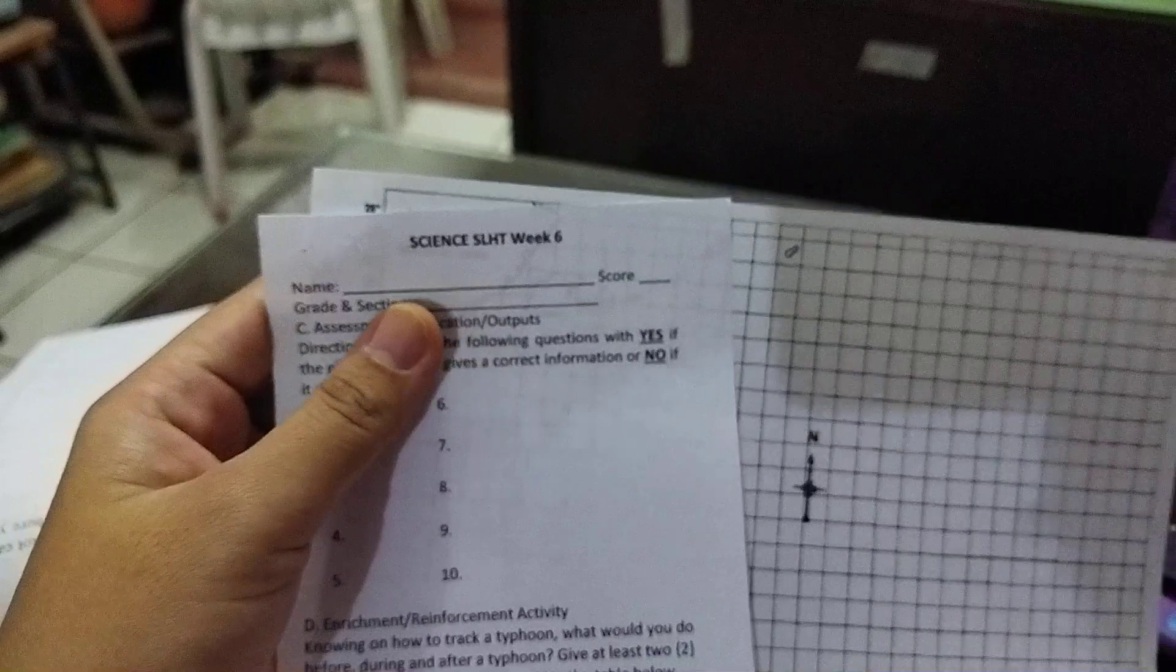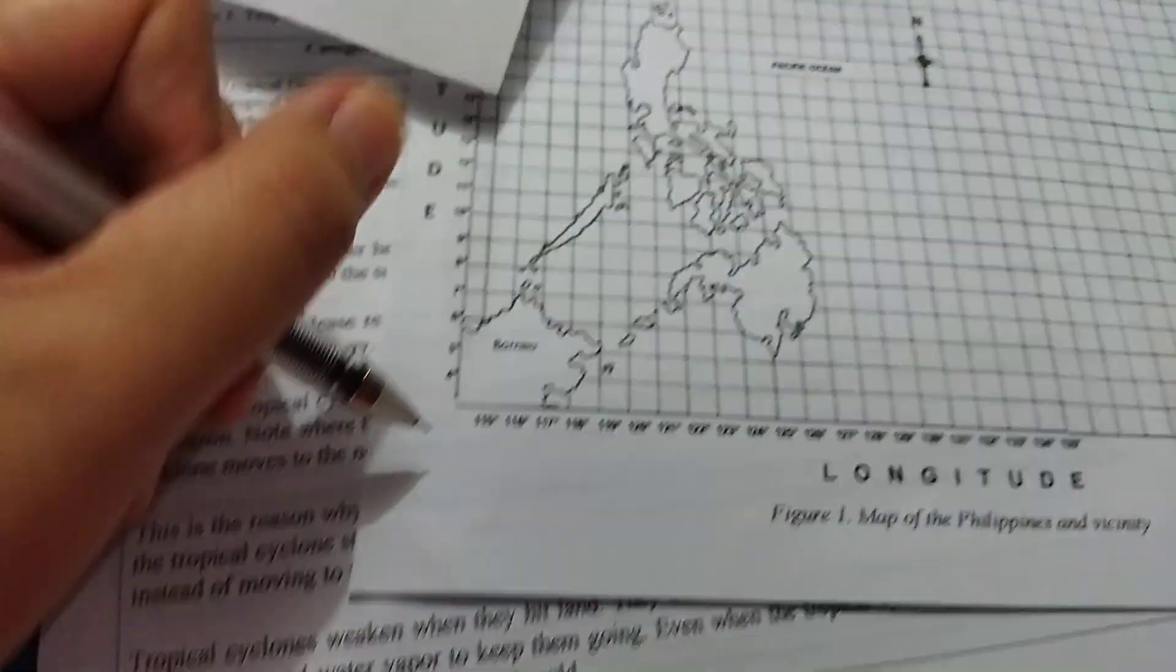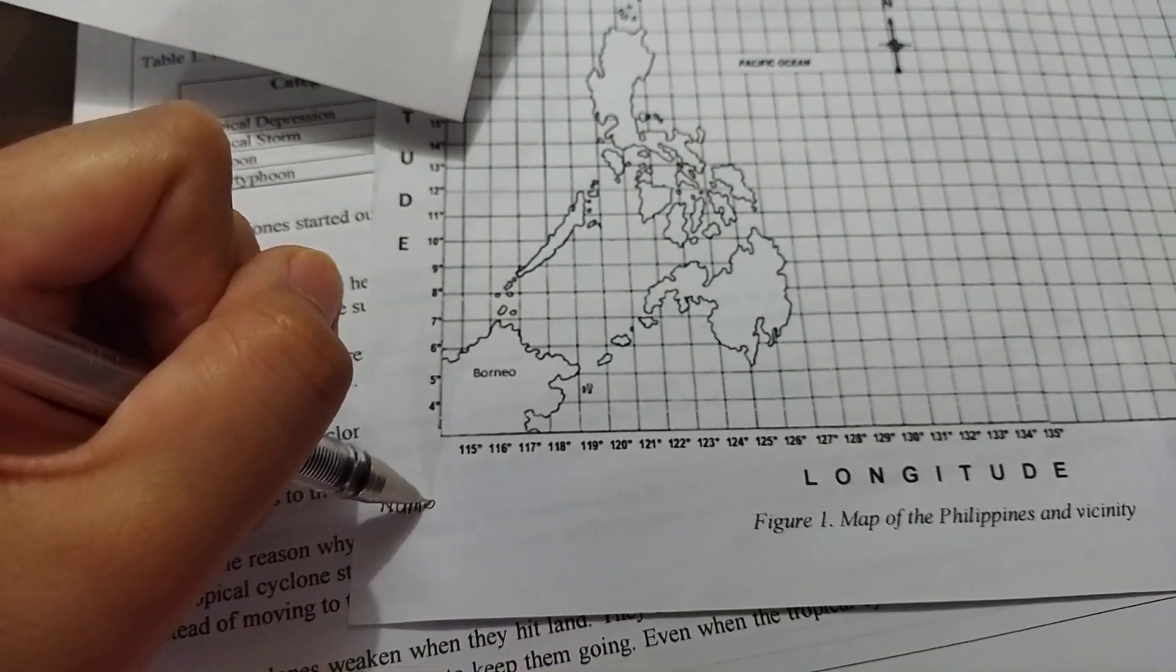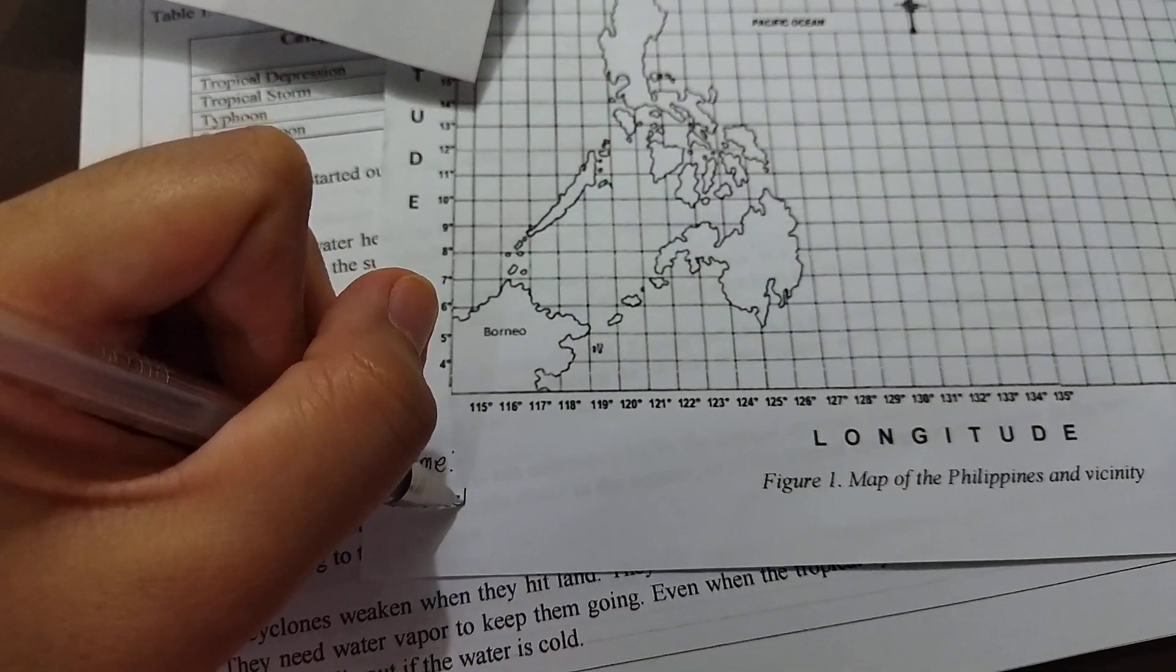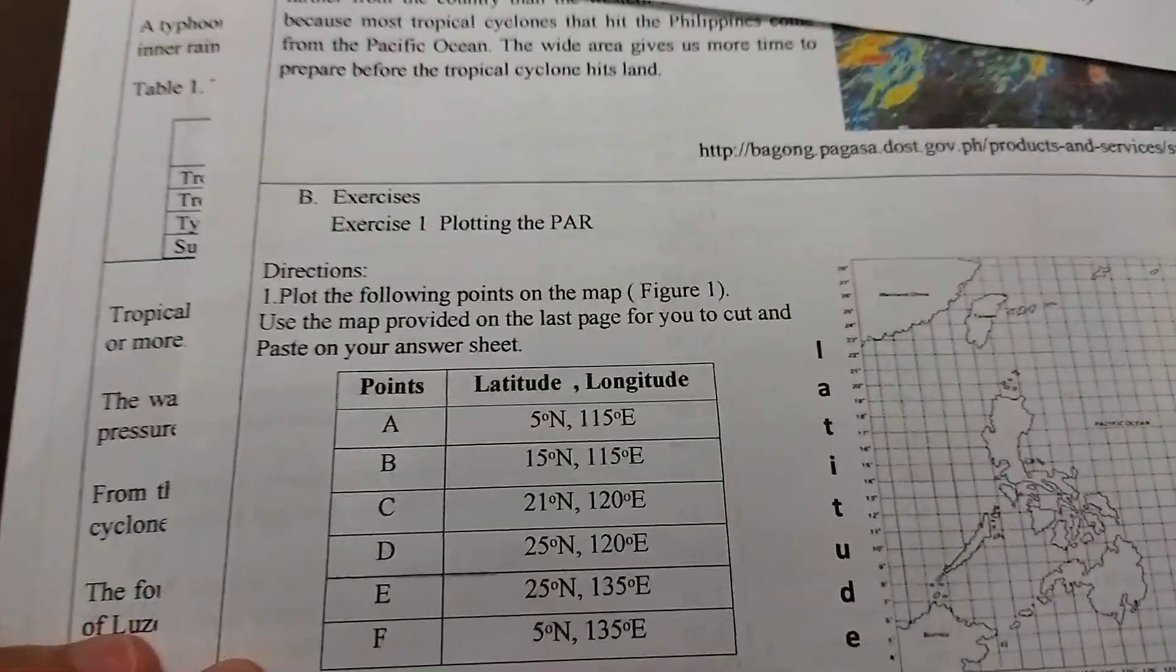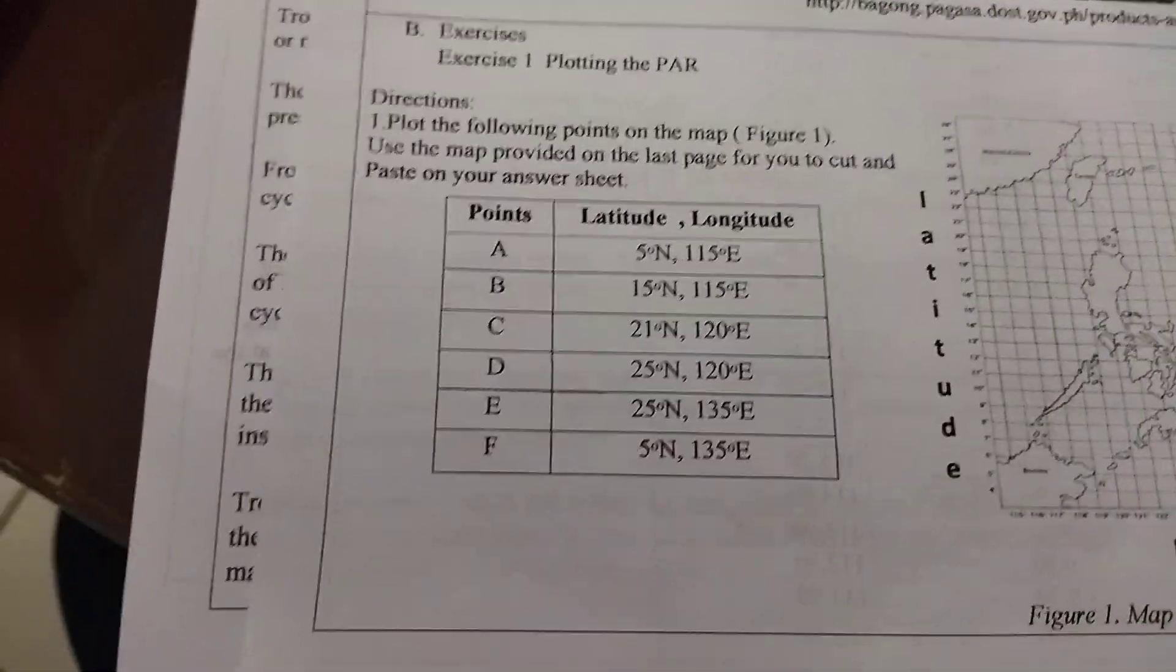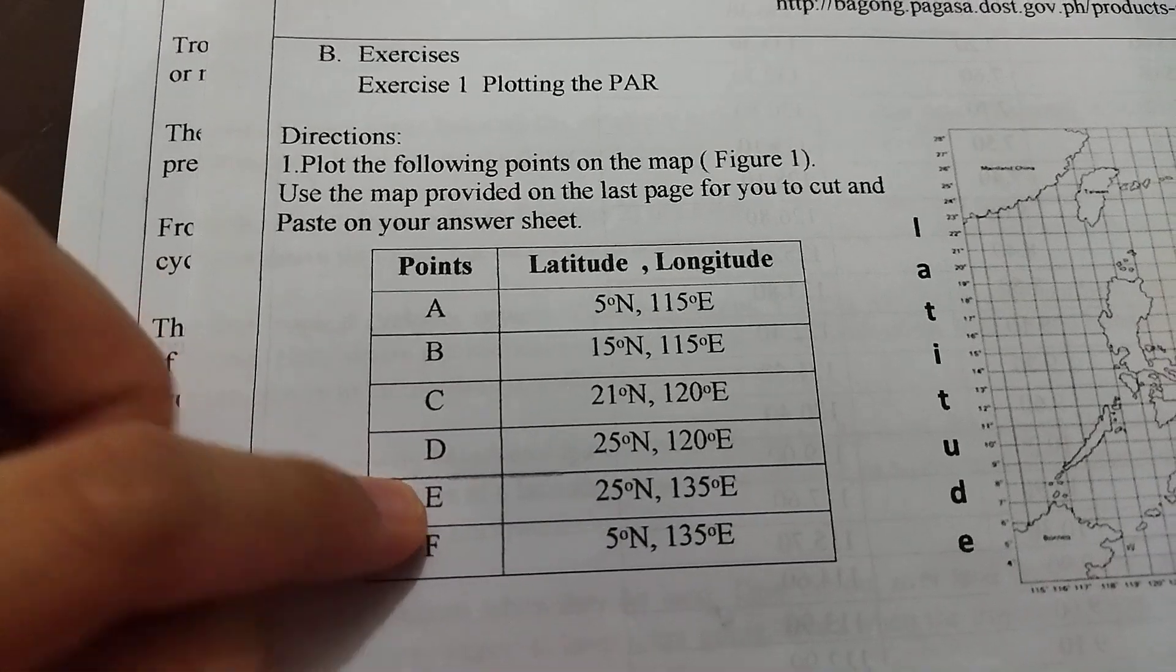You may staple the two or just simply write. If you don't have a stapler at home, write your name below. You are going to write name, grade and section. Next, let's continue the exercise. Plot the following points. We have point A, point B, point C, point D, point E, and F. So we have 1, 2, 3, 4, 5, 6 points to plot on this map.